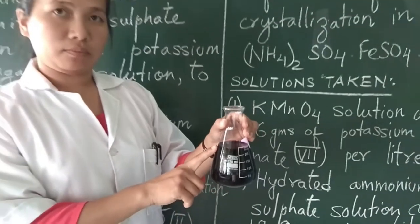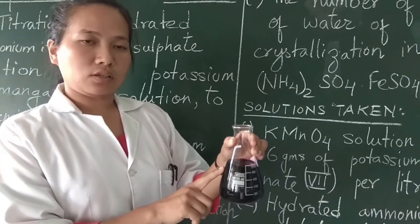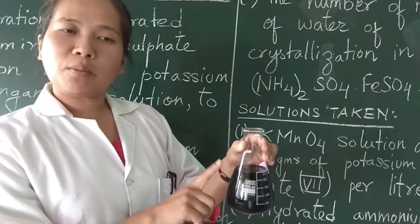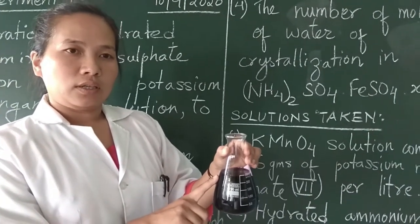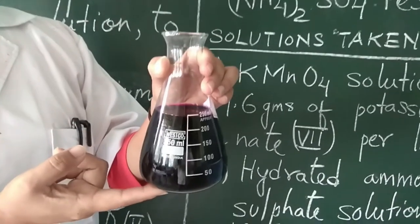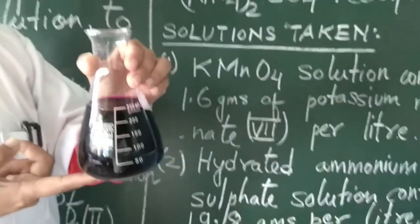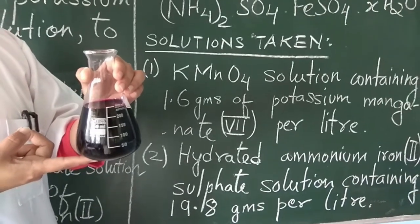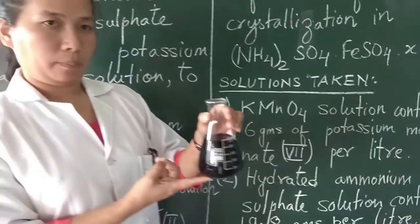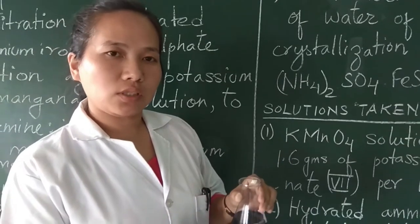You must remember that KMnO4 is not our primary standard. Because we cannot get KMnO4 in pure form, and while making the aqueous solution of KMnO4, there are some reducing substances present in distilled water which will react with KMnO4 and produce manganese dioxide, which will catalyze auto-degradation of KMnO4. That is why while doing KMnO4 titrations we use dilute sulfuric acid.